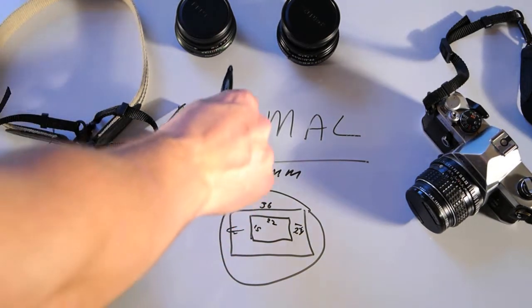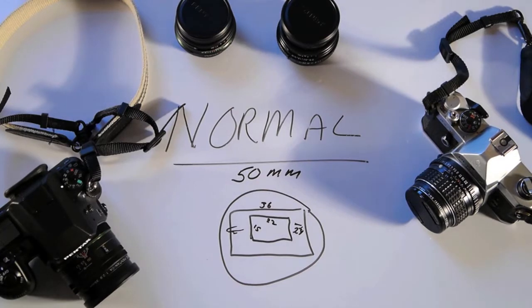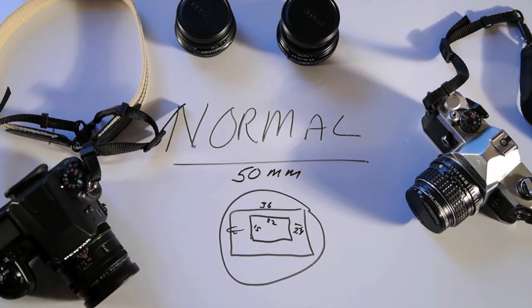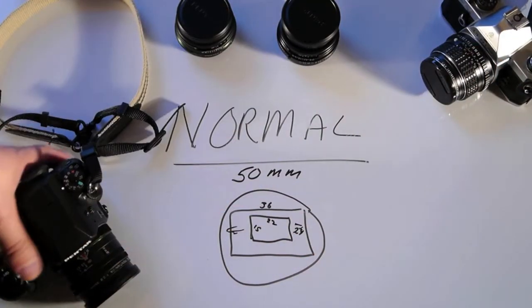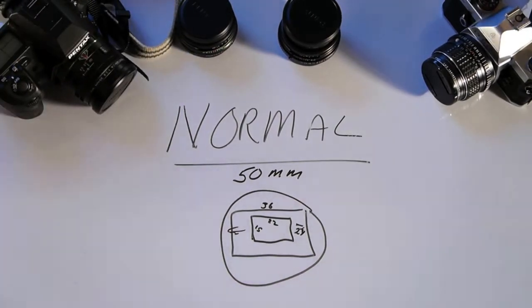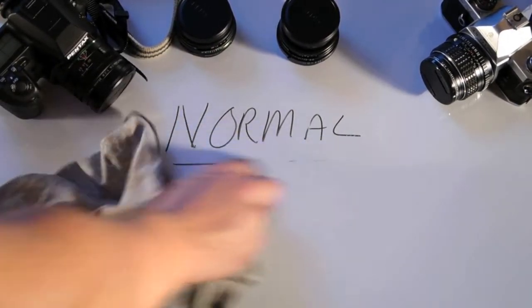Okay? Alright. So, we're going to talk about crop cameras. Or FX cameras or DA cameras, depending upon the brand, EFS cameras in Canon. Alright. So, a normal lens for our digital cameras that are not full frame.